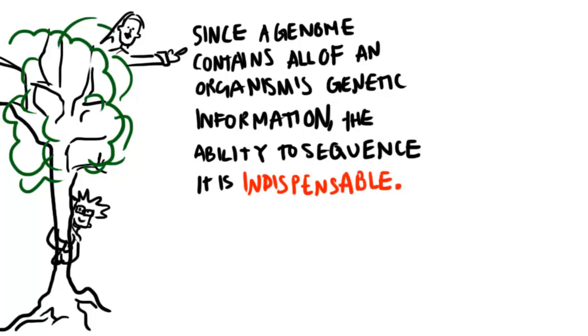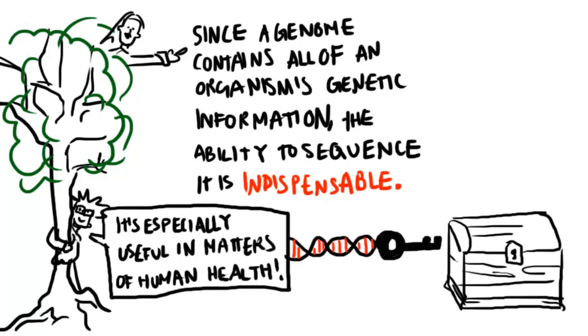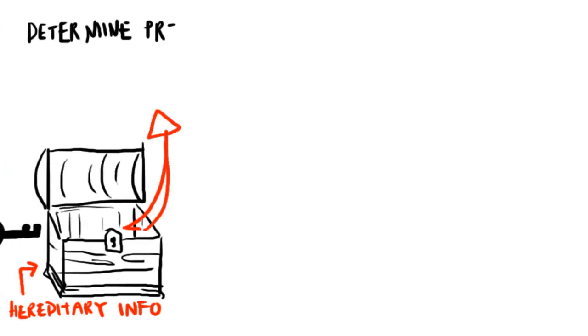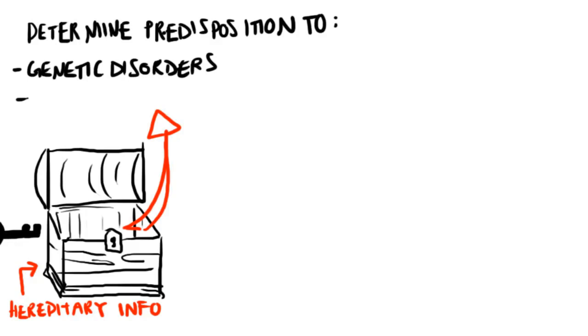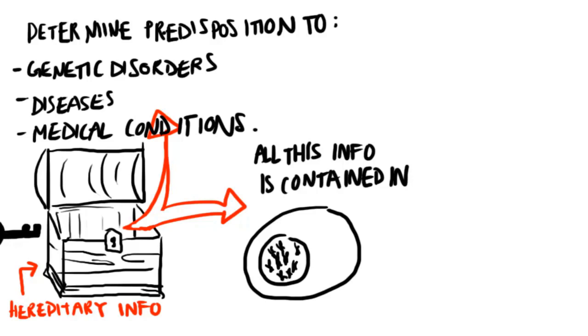Gene sequencing is especially useful in matters of human health. Sequencing a person's genome gives us access to all their hereditary information. We can actually determine their predisposition to genetic disorders, diseases, or certain medical conditions. All this information is contained in the DNA in one cell nucleus.